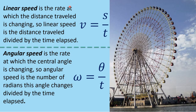The linear speed is the rate at which the distance traveled is changing — the arc length s becomes the distance in this new concept. The angular speed is interested in knowing the rate at which the central angle is changing; the central angle theta must be in radians. We normally talk about how many revolutions happen after a particular time, or how many radians per minute, per second — that is all about angular speed.